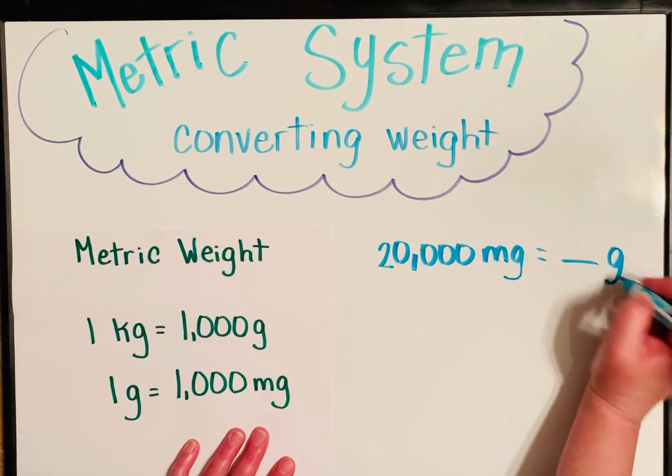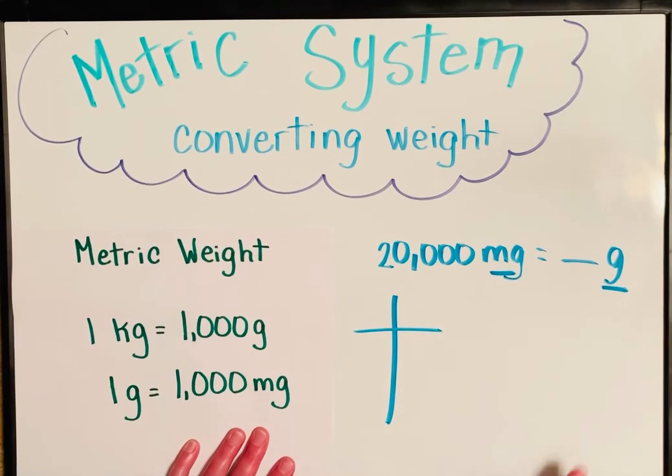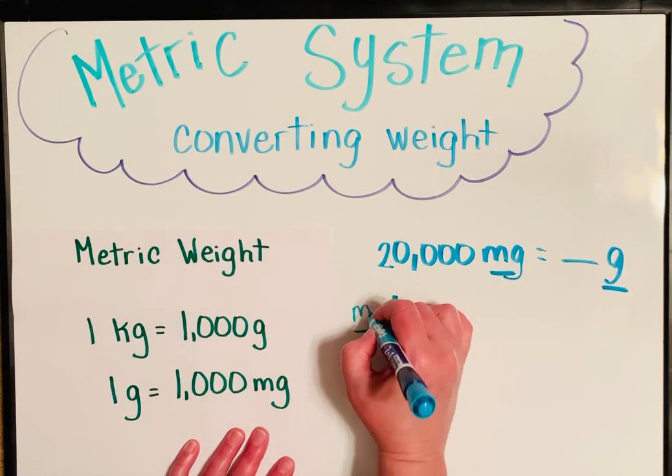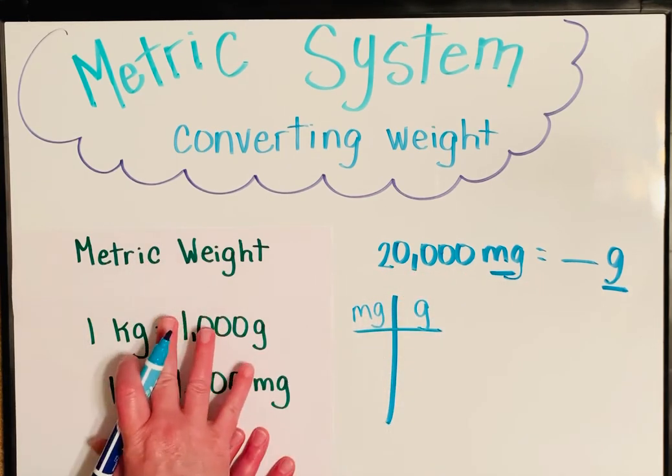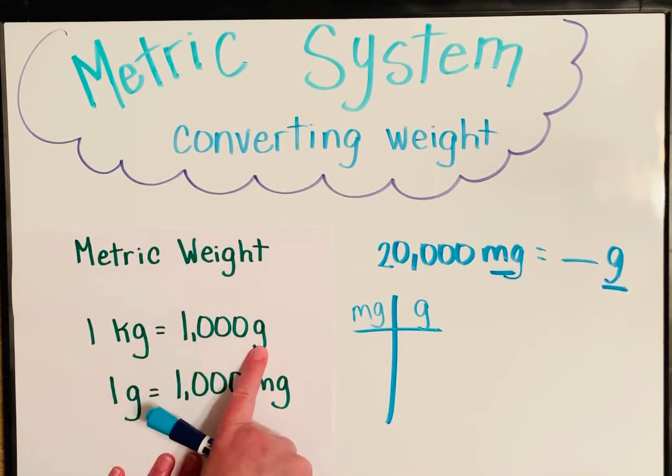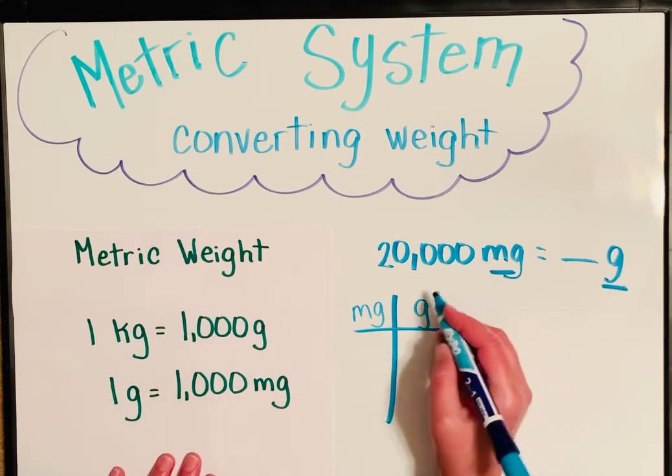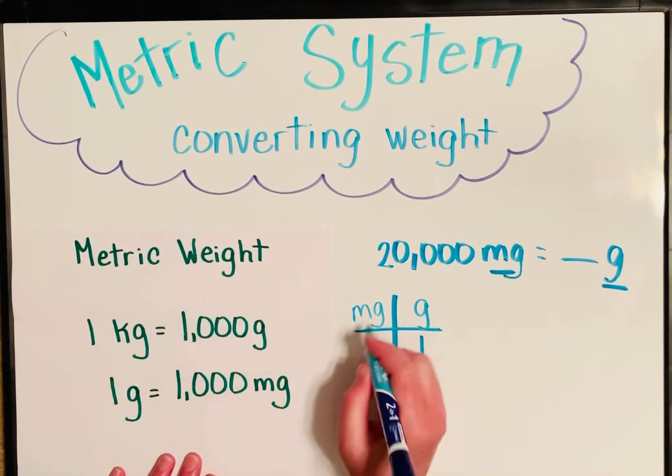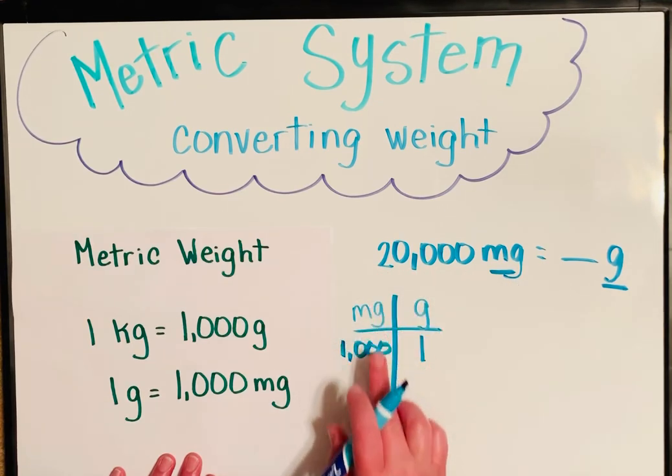I'm going to start by making a T-chart. I'm going to look at my two units of measure. I have my first one is a milligram, my second is a gram. Now before I start putting numbers in, I've got to look at my chart. I've got to figure out what that rule is, what's the relationship between those two numbers, milligram and grams. So I'm going to look, here we go right here, gram and milligram. So one gram equals one thousand milligrams.